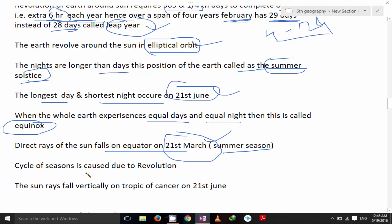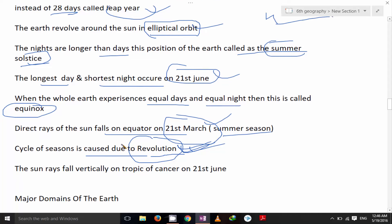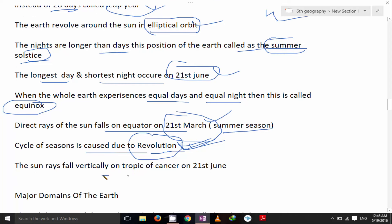Cycle of season is caused due to revolution, not by rotation. Revolution is important. Cycle of seasons is revolution and cycle of days and night is rotation. Due to rotation, the sun rays fall vertically on tropic of cancer on 21st June.